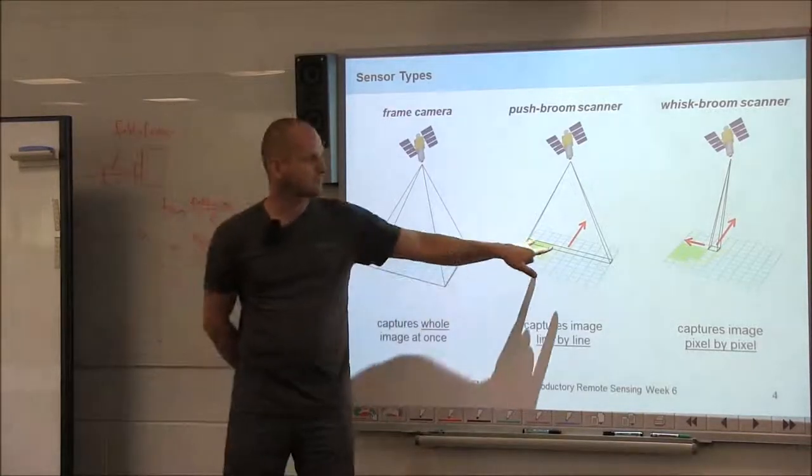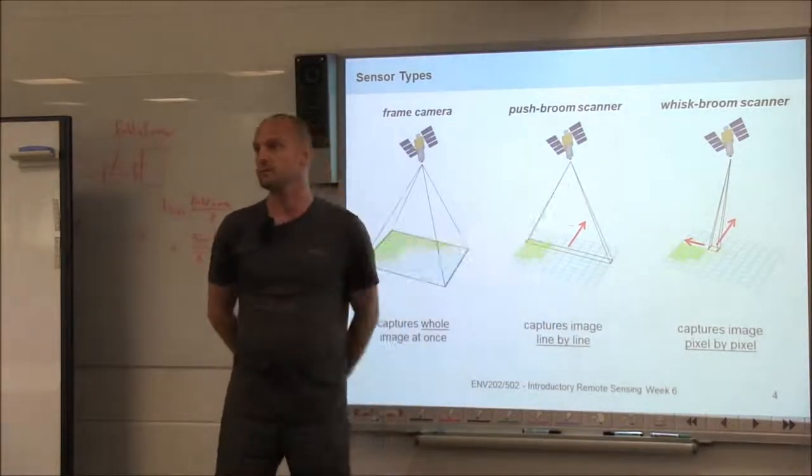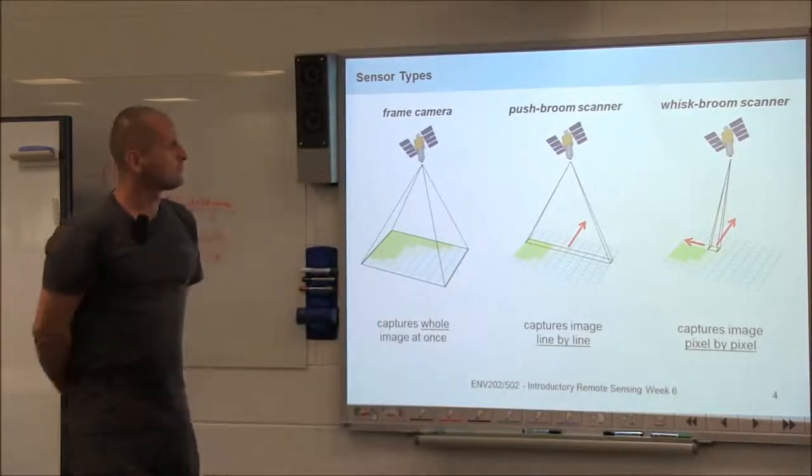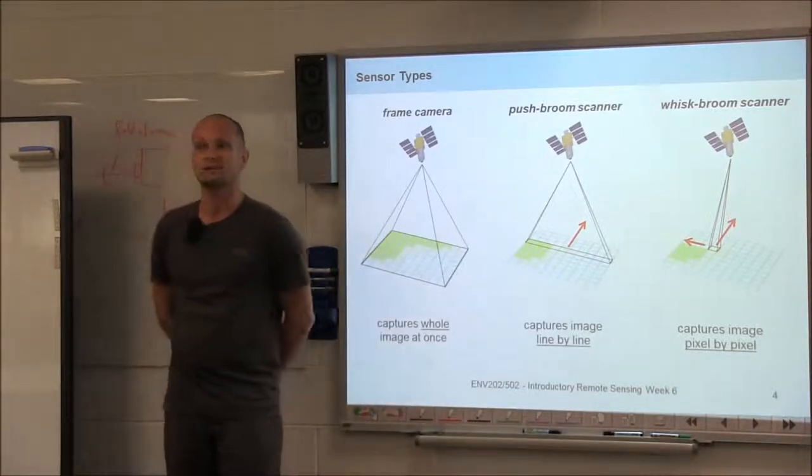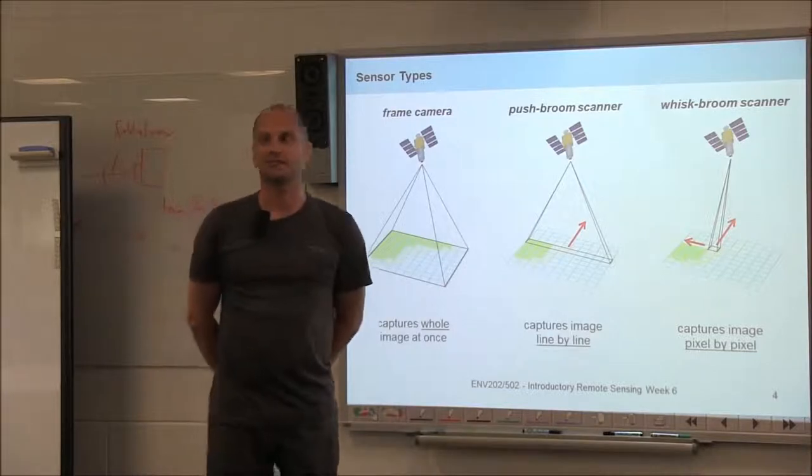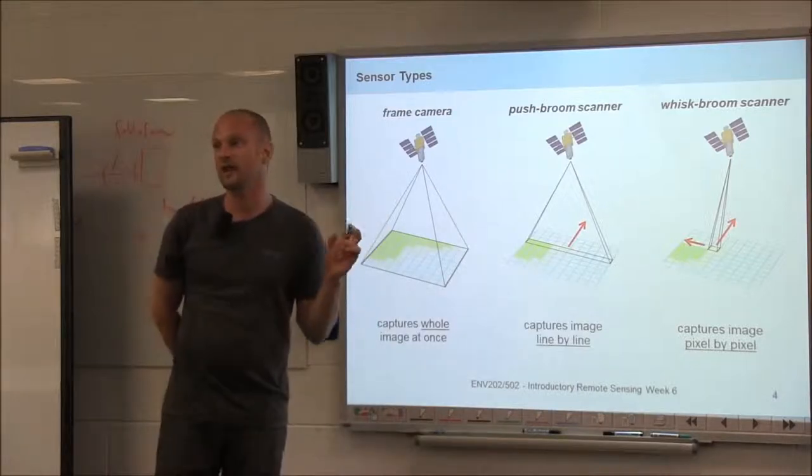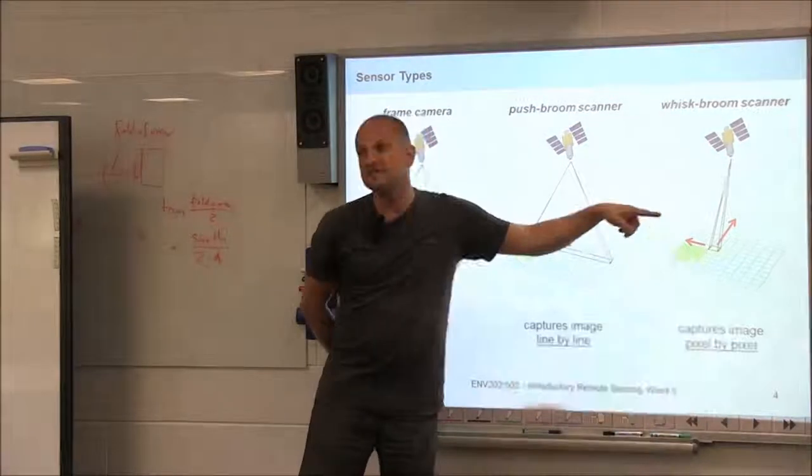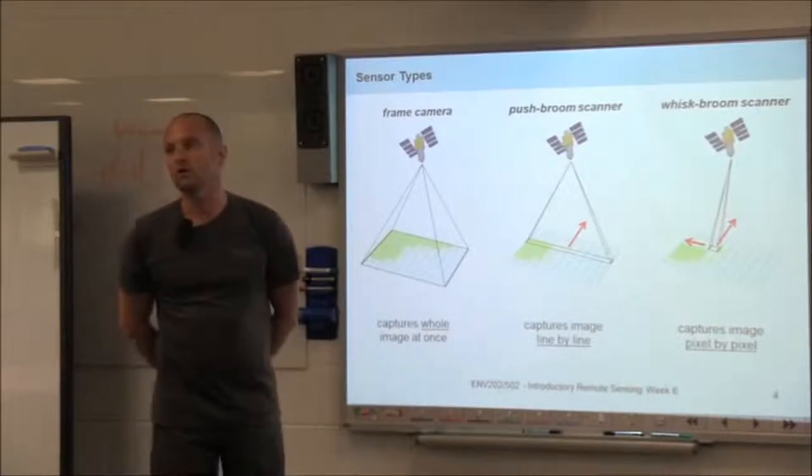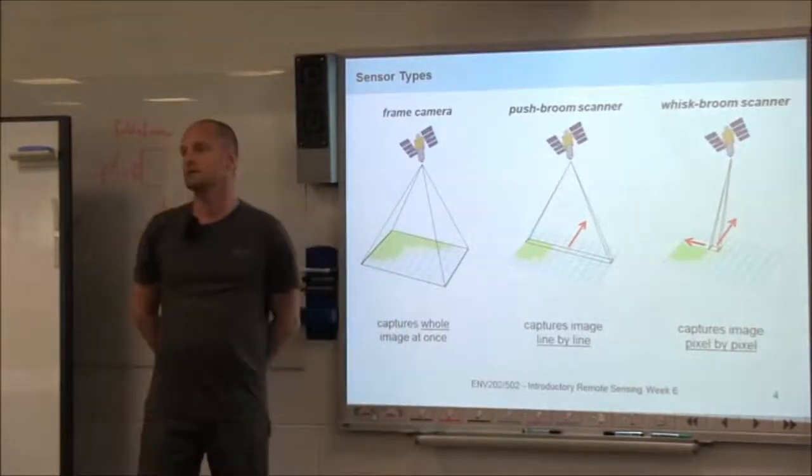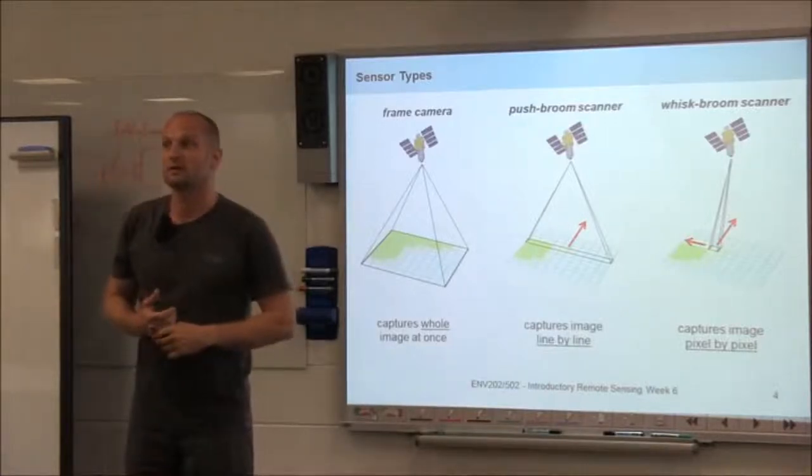This type of sensor is becoming more common these days. I think Landsat 8 is a push-broom scanner as well. Whereas the older Landsats, they've always been whisk-broom scanners, which actually caused some problems. You might have heard of the scan line corrector issue on Landsat 7. Landsat 7 imagery is degraded, looks really weird on the edges, because a mechanical component has failed related to the scanning optics. That was probably one motivation for going to push-broom scanner—you've got no mechanics that can fail.